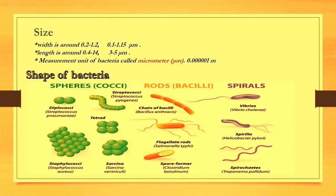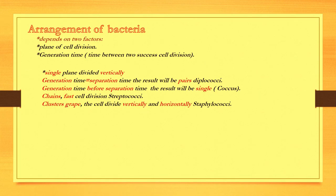The arrangement of bacteria depends on two factors. The plane of cell division, which is determined by the cortical division site in the plasma membrane. The second factor is generation time, which means the time it takes for a population of bacteria to multiply and occurs when cells plan to divide.